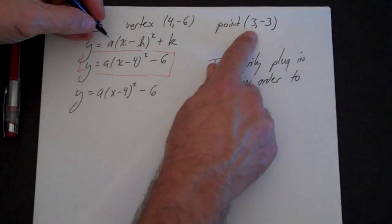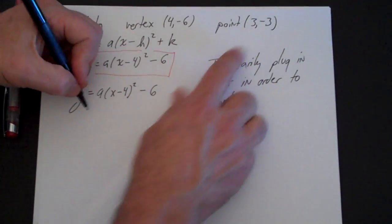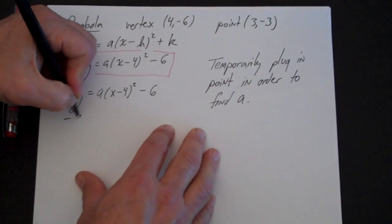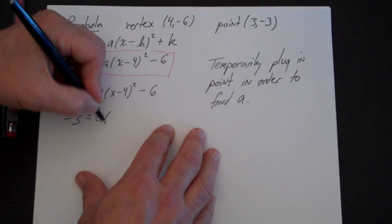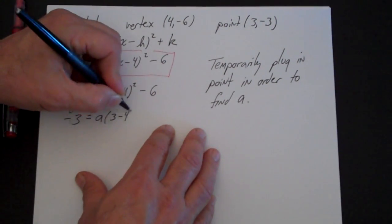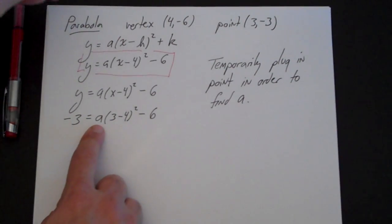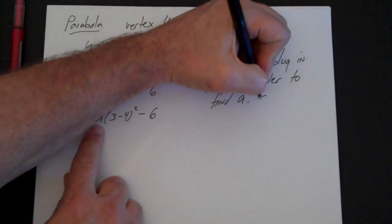We have y = a(x - 4)² - 6. We are going to plug in the point (3, -3). So where the y is, we are going to plug in -3 = a(3 - 4)² - 6. And all we need to know is a, so we are going to solve for a.